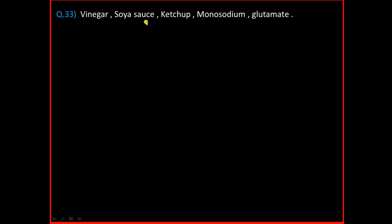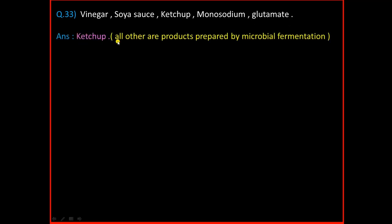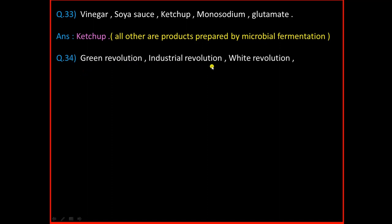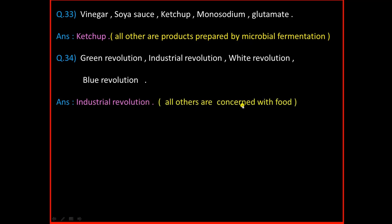Question Number 33: Vinegar, Soya Sauce, Ketchup, Monosodium Glutamate. Question Number 34: Green Revolution, Industrial Revolution, White Revolution, Blue Revolution. And the answer is Industrial Revolution. All others are concerned with food.